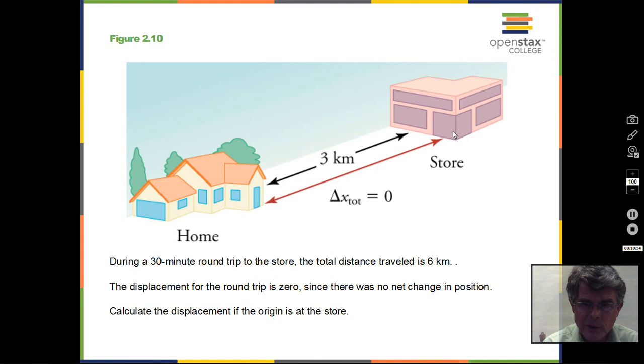Distance is the total path that's traversed, but displacement we have to do a subtraction. And next video we'll do speed and velocity.